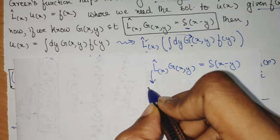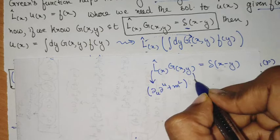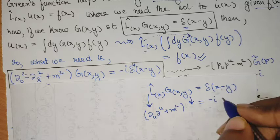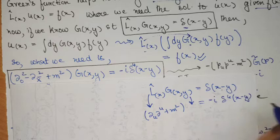Now if L(x) is the Klein-Gordon operator — that is ∂μ∂μ + m² — then I need to find G(x) that solves this equation, but with a particular factor, because there will be some iota and minus-one terms on both sides.